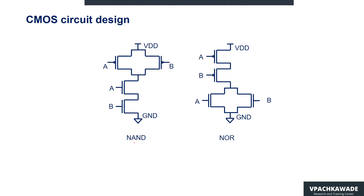Another diagram is of the CMOS NAND gate. We see here two NMOS switches constructed in series, which perform the work of the pull-down network. Two PMOS switches perform the job of the pull-up network. This circuit performs the logic of NAND, so for a particular combination of inputs, the output would be Y equals A NAND B.